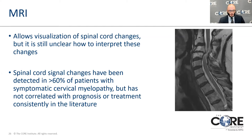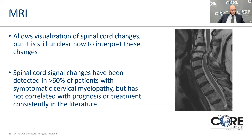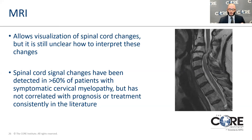MRIs allow us to visualize the spinal cord. When there's compression over time, the spinal cord can actually show changes. On the image on the right, the gray streak — the spinal cord — has a white hazy change in the center where the compression is worst, behind C3-4. Spinal cord changes have been detected in over 60% of patients with symptomatic cervical myelopathy, but it hasn't been shown to consistently correlate with prognosis or treatment. This is something we see in compression that's been severe for longer periods of time.